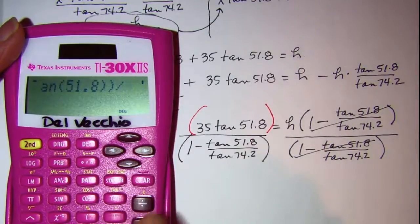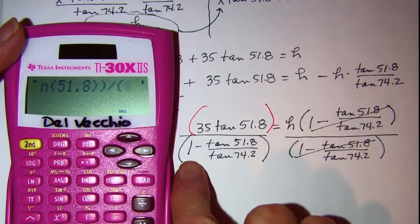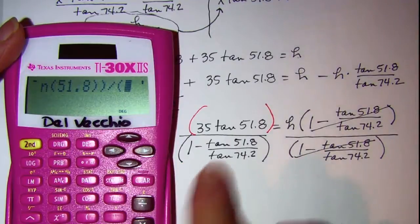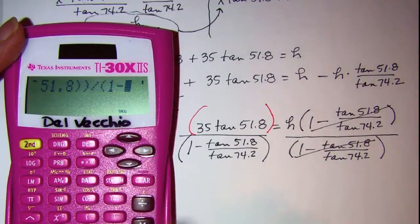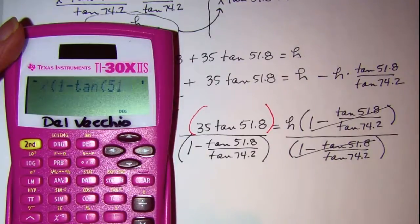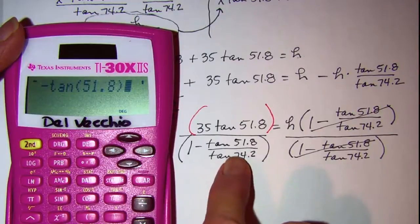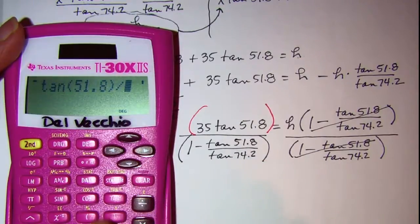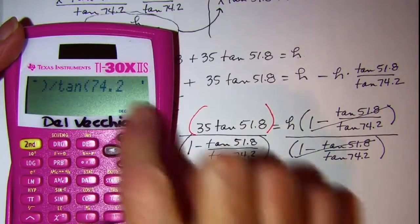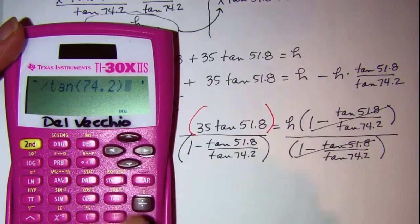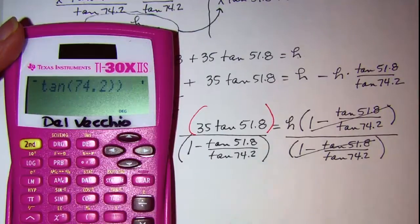Divided by open parentheses in the denominator: 1 minus tangent 51.8. Close the argument on tangent, and then divided by tangent 74.2. Close the argument on that tangent, and close the parentheses in the denominator.